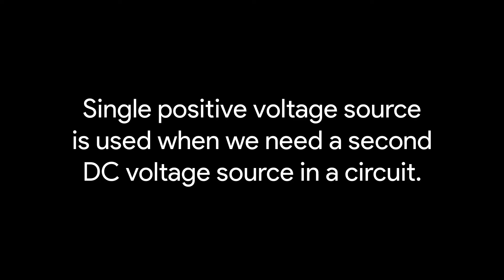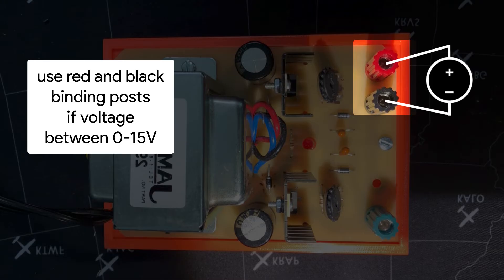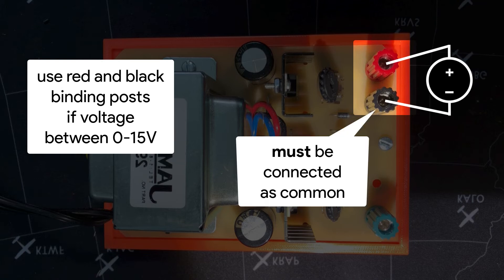The supply can alternatively be used as a single, positive voltage source in cases where two different DC supplies are required. If the required source voltage is less than 15 volts, then the red and black binding posts can be used to source that voltage. The black binding post will need to be connected to a common ground in your circuit.